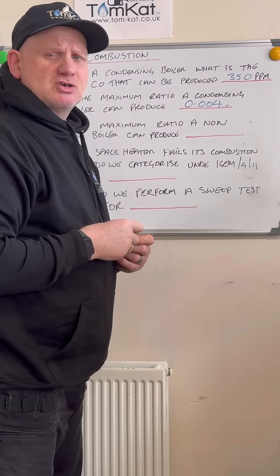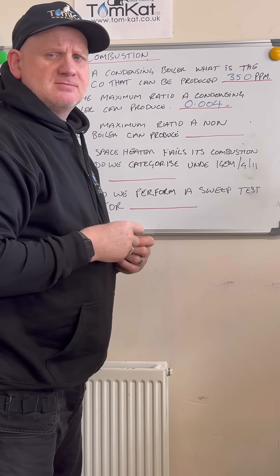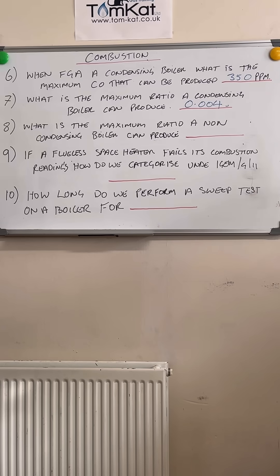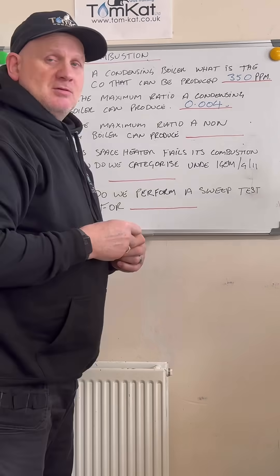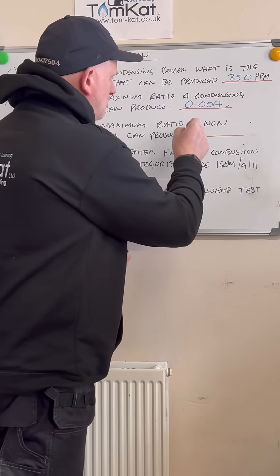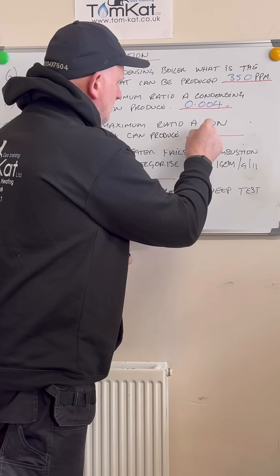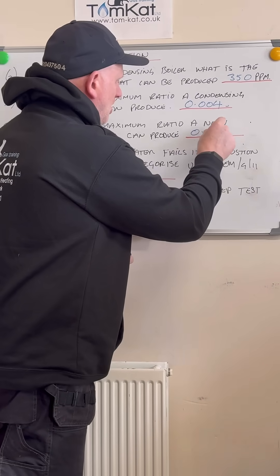Let's have a look at question eight. What is the maximum CO/air ratio a non-condensing boiler can produce? Hopefully you wrote 0.004.